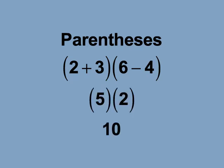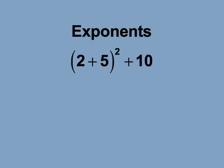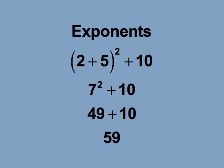The next rule is that any expressions with exponents are simplified after simplifying expressions in parentheses. Look at this expression: the quantity 2 plus 5, squared, plus 10. Simplify the term in parentheses first — the result is 7 squared plus 10. Then simplify the squared term, giving 49 plus 10, which is 59.